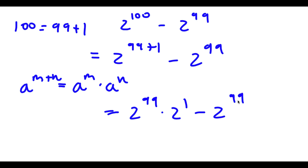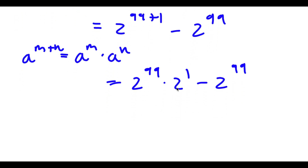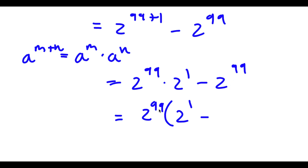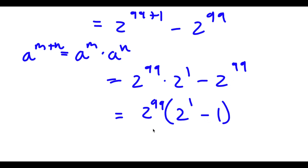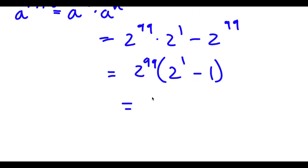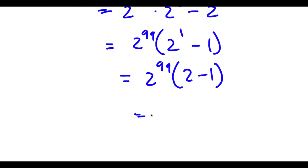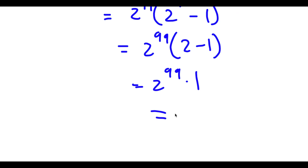Now I have this minus 2 to the power of 99. Because both terms have 2 to the power of 99, I can go ahead and factor out 2 to the power of 99. So now I have 2 to the power of 99 times 2 to the power of 1, and negative 2 to the power of 99 divided by 2 to the power of 99 is negative 1. Now 2 to the power of 1 is the same thing as 2, so I have 2 to the power of 99 times 2 minus 1. 2 minus 1 equals 1, and anything times 1 is itself, so I'm simply left with 2 to the power of 99.